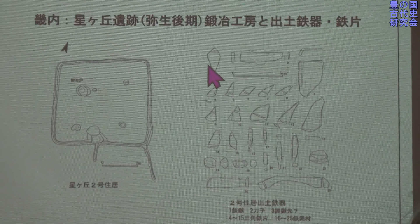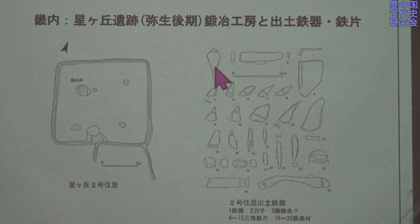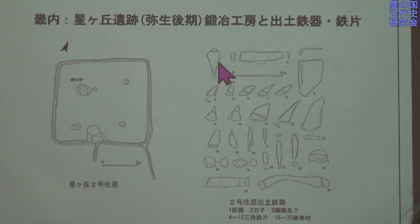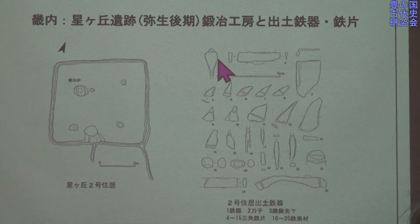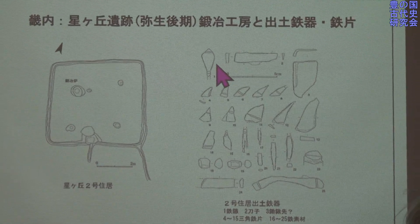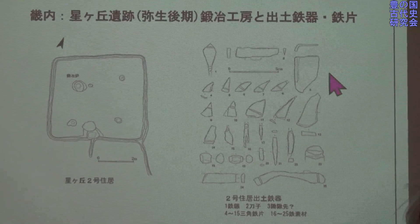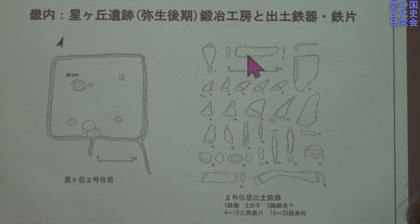機内の星川岡遺跡の弥生中期の工房からも、同じような組み合わせの遺物が出ております。ここに鉄族がありますね。機内の方も鉄は少ないんですが、こういったものもあるということで、それなりの理解が必要じゃないかと思います。道具としてはすき先、そういったものもあります。